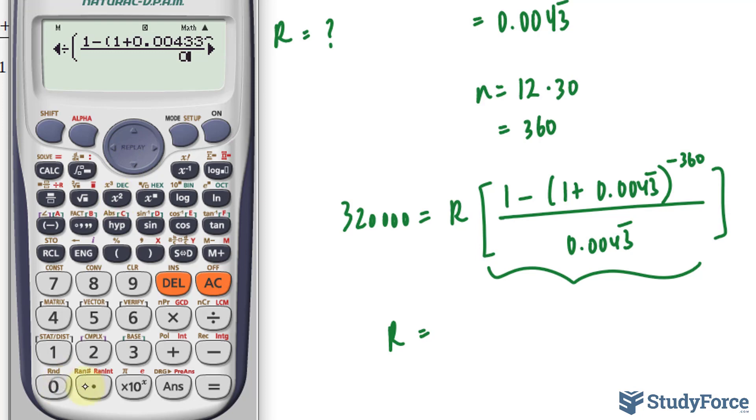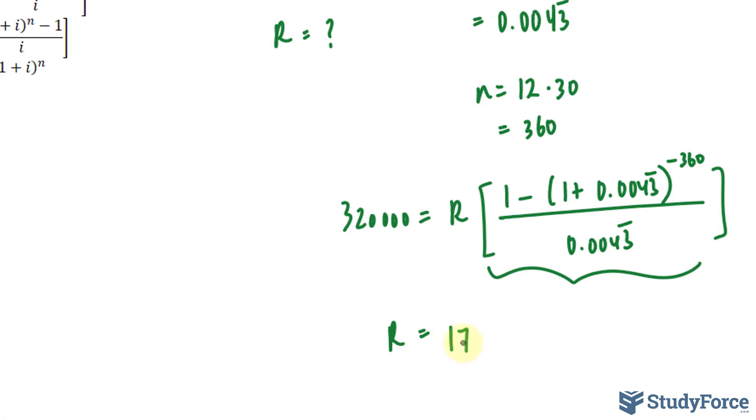Raised to the power of negative 360. And in the denominator position, 0.00433, a couple more. Close parentheses. And we end up getting 1,757.15. So that is how much you are paying every month for the next 60 months.